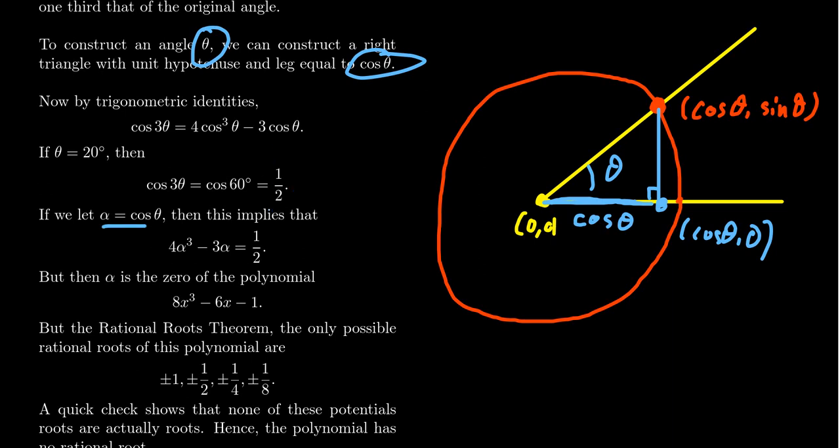For simplicity, say that alpha is the cosine of theta here, cosine of 20 degrees. And so then plugging this into the above equation, we then get that equation becomes 4α³ minus 3α equals one half. If you times both sides by 2, you'll get 8α³ minus 6α equals 1.